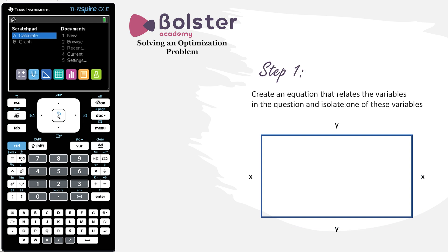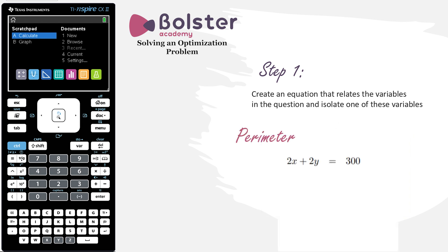Our first step is to create an equation that relates the variables we have in the problem, and then isolate one of the variables. We know that the entire perimeter must be 300, therefore 2x + 2y = 300. If we isolate y, we subtract 2x from both sides and divide both sides by 2, and we're left with y = 150 - x. We've successfully completed step 1.